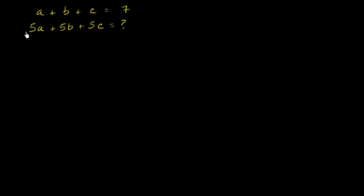So the big idea here is to realize that 5a plus 5b plus 5c, that's just the same thing as 5 times (a plus b plus c). If you distribute the 5, you get 5a plus 5b plus 5c. Another way you could think of it is we are factoring a 5 out. If you factor a 5 out, you're left with 5 times (a plus b plus c).